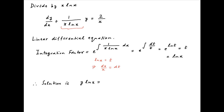The solution of the given differential equation is given by y times the integration factor ln x, equal to the constant of integration plus the integral of the integration factor ln x times the expression on the right-hand side of the differential equation, which is 2 upon x dx.